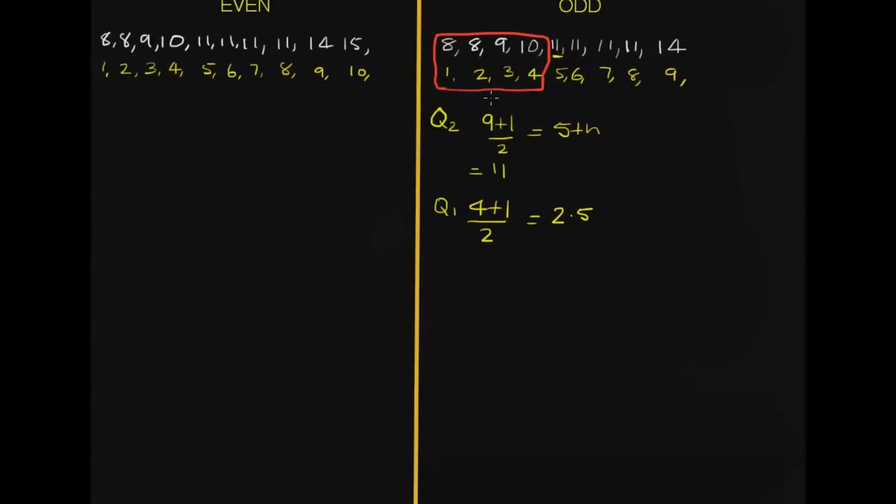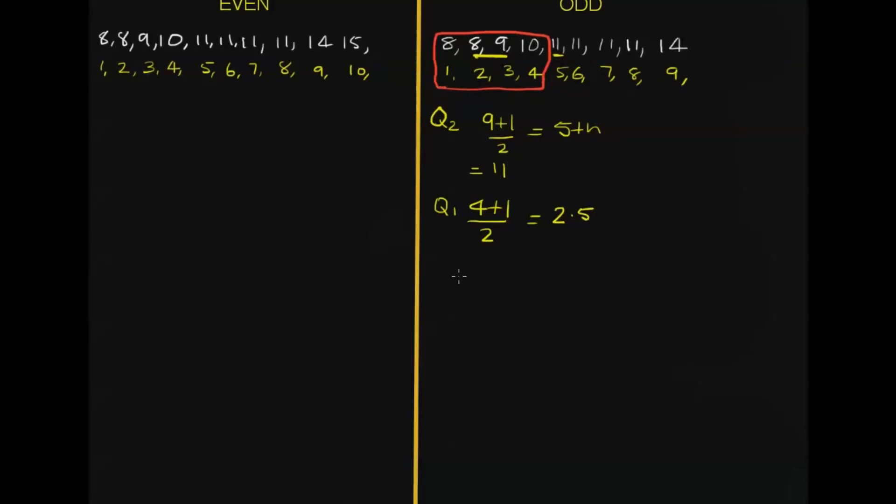So the 2.5 score is going to be the average of that 8 and 9. So the average of 8 and 9 is 8.5, and that's our lower quartile.